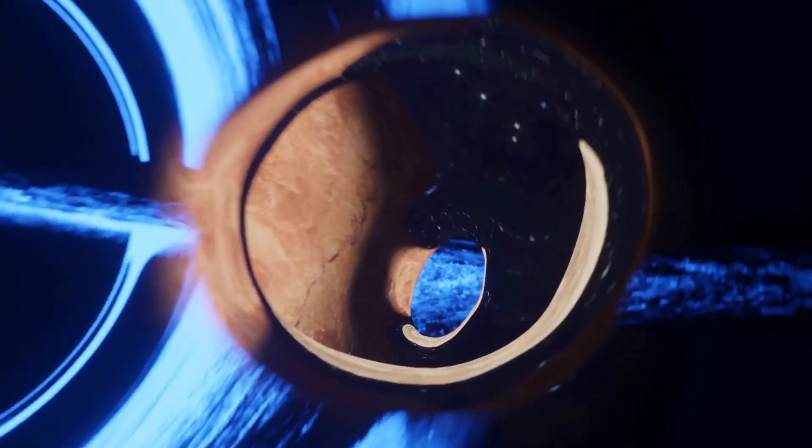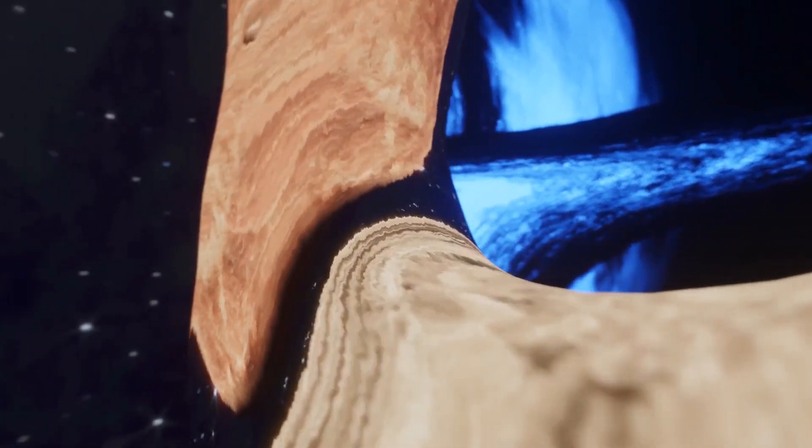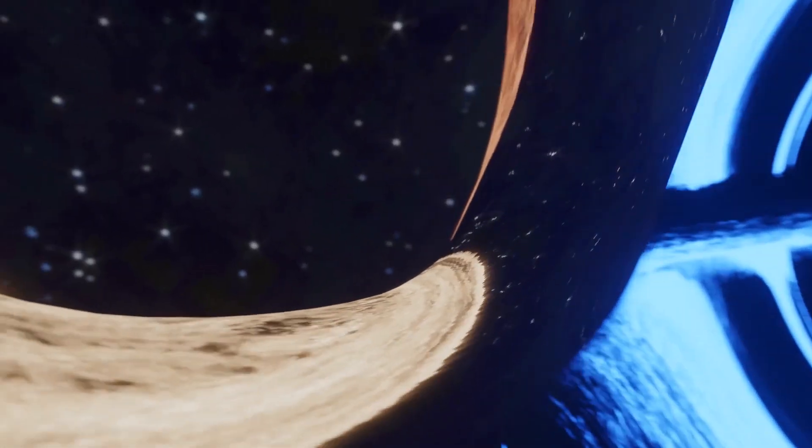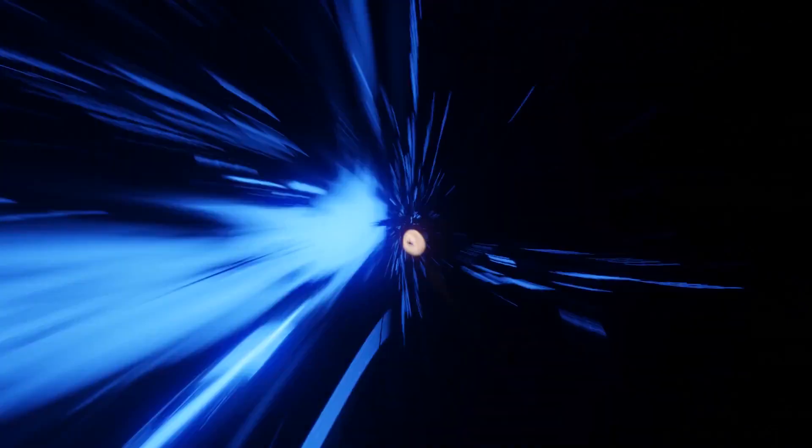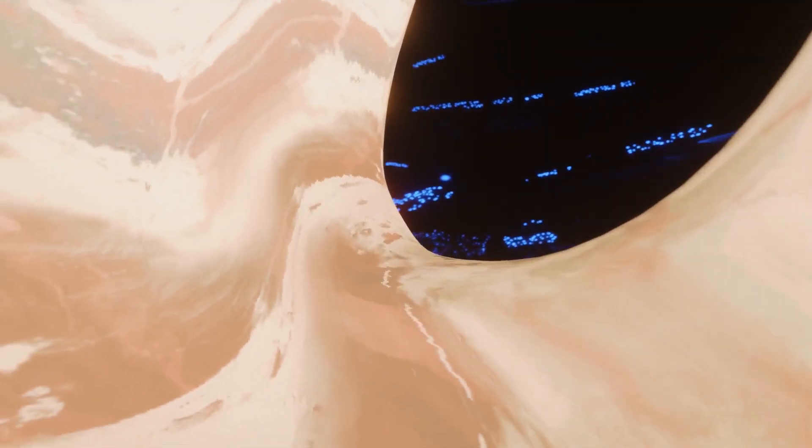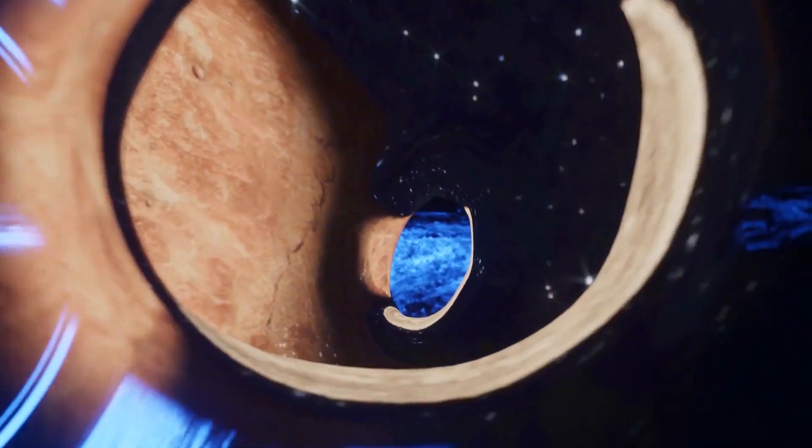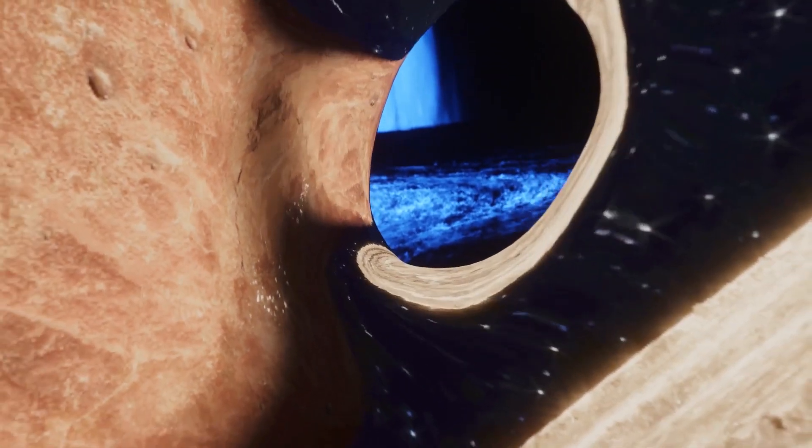Massive bodies, such as stars or black holes, are especially effective in causing significant gravitational lensing due to their immense gravitational attraction. Black holes, in particular, represent one of the most extreme examples due to their incredible mass and compact size, leading to very pronounced lensing effects.